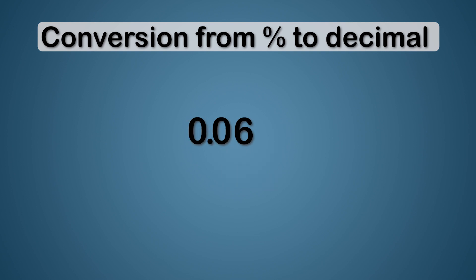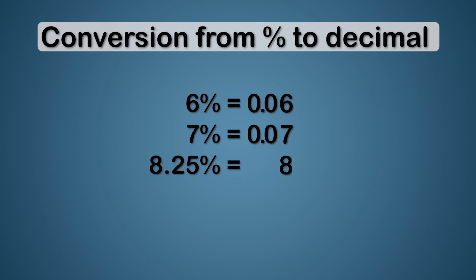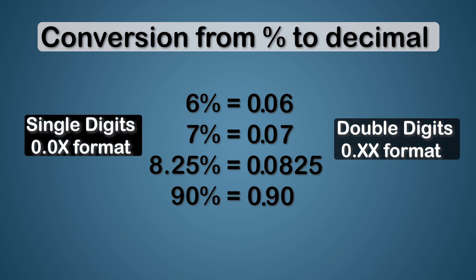So 6 percent becomes 0.06. So 7 percent will be 0.07, and 8.25 percent will be 0.0825. Remember, you're shifting the decimal two places to the left. And 90 percent will be 0.9, and 9 percent will be 0.09. Don't get confused.